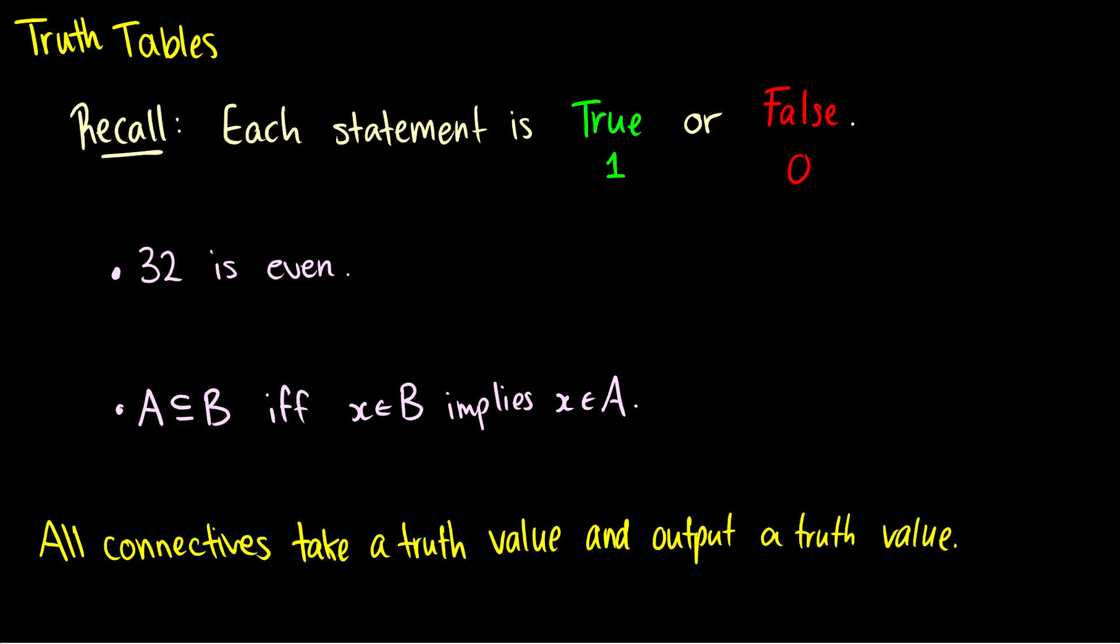In this video we're going to discuss truth tables. Now what are truth tables? Well, truth tables will tell us all possible outcomes of statements and connectives. So for instance, let's recall that each statement is either true or false, and true is a one, false is a zero.